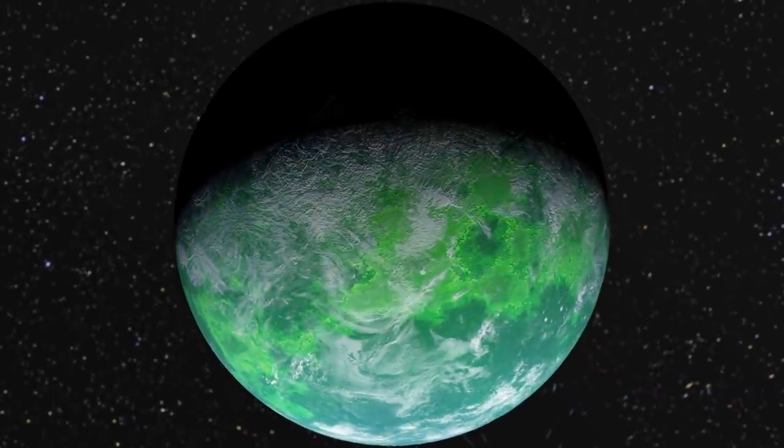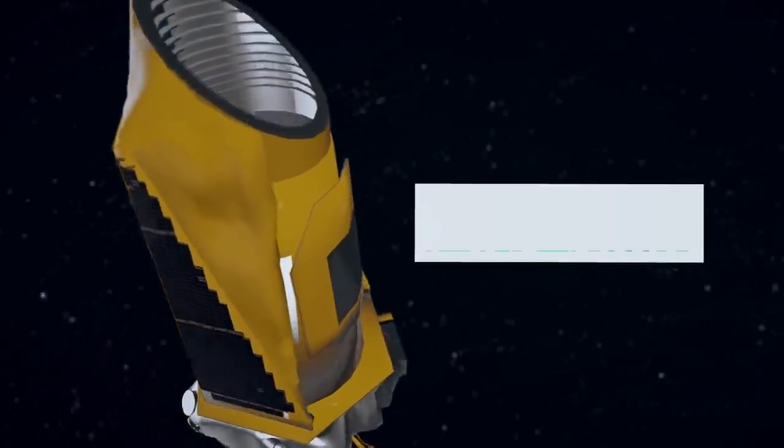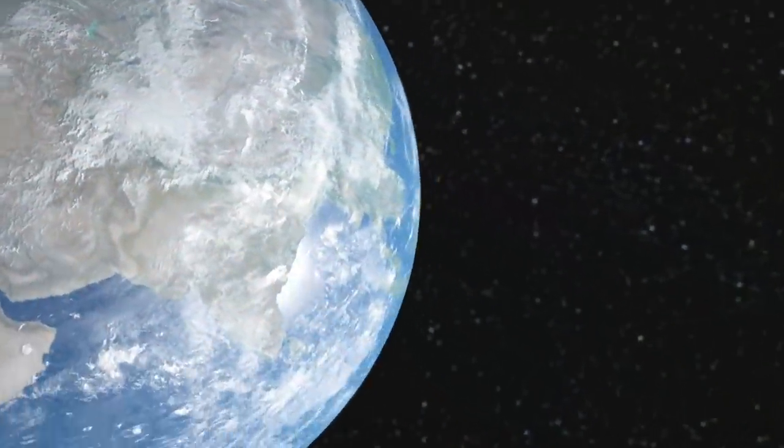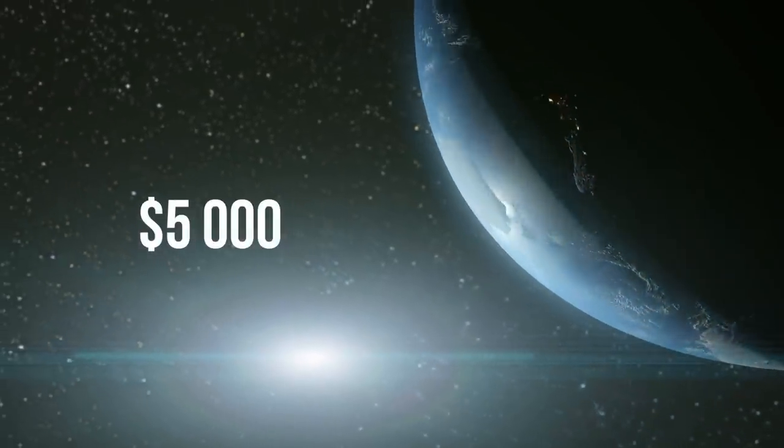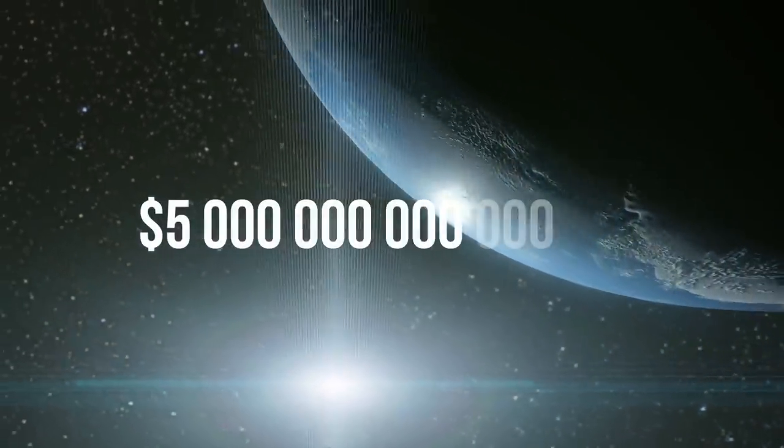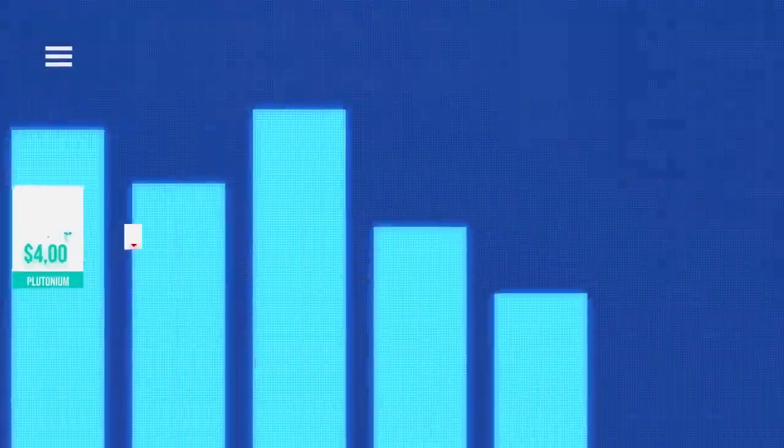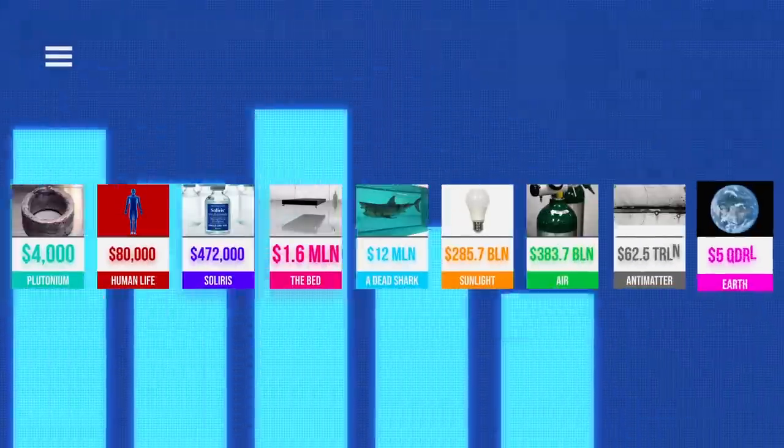It was originally used to calculate the cost of the exoplanets which the Kepler telescope was investigating. Greg Laughlin, a professor of astronomy and astrophysics at the University of California, Santa Cruz, suggested using it to estimate the Earth's value. His calculations showed that our planet can be bought for $5 quadrillion. Does it appear that the most expensive thing on Earth is the Earth itself? I guess that's fair.